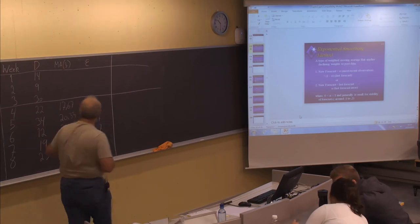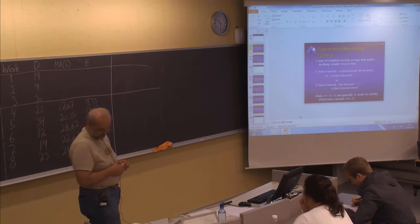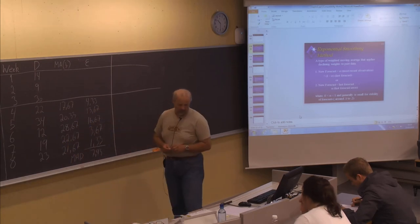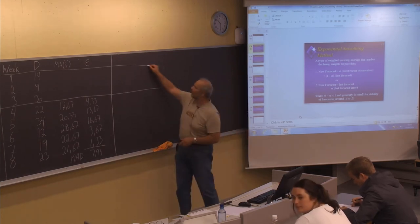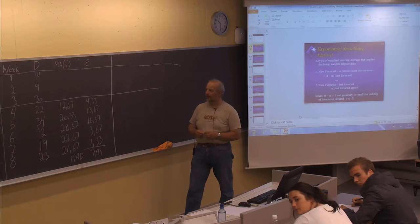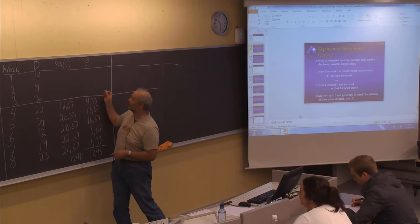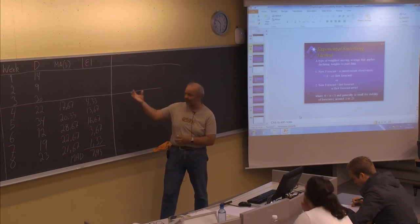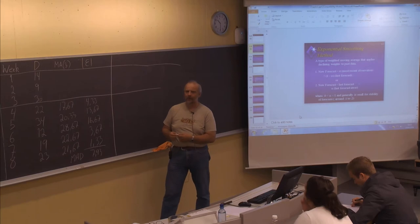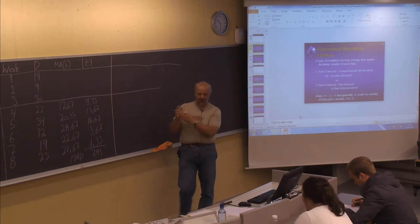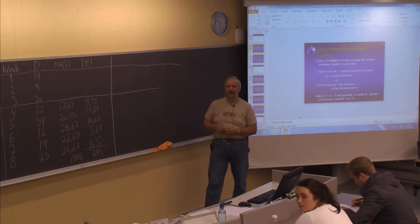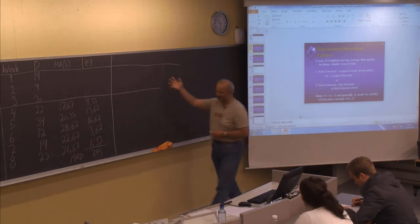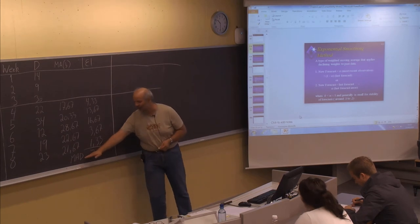We start with the same values in week number four as we found by using the moving averages method. A student asked whether the forecast error should always be in absolute value. When you are using the mean absolute deviation, it should be the absolute value, which is important. But otherwise, there could be reasons to see if it's negative or positive. As noted, in the book it's shown as negative also. So putting up the absolute values here, it will be correct — it was just to see what the value would be for the mean absolute deviation.